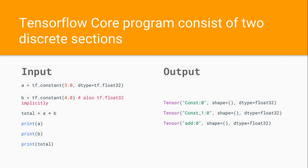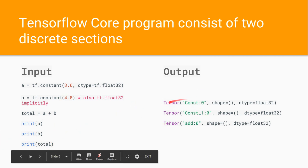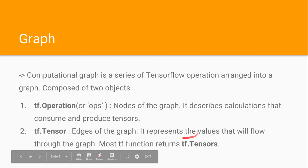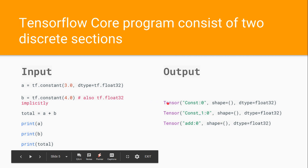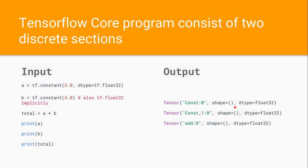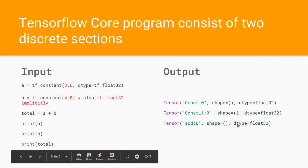TensorFlow core consists of two discrete sections. If I write this code: a equals tf.constant(3.0) with data type tf.float32, and b equals tf.constant(4.0), which takes the default value as float32, then we'll be adding total equals a plus b, then printing a, b, and total. The output will be tensors. As I said, most TensorFlow functions return tensors. It returns a tensor value of constant zero shape, scalar, with data type float.